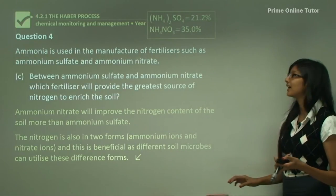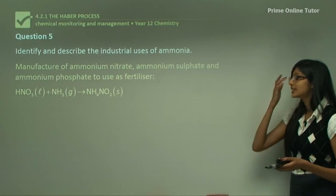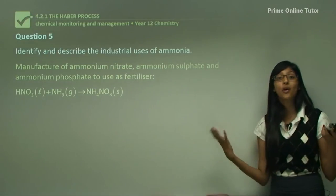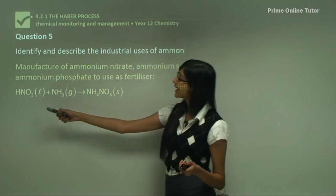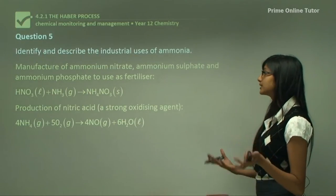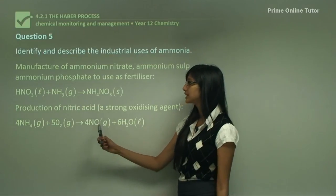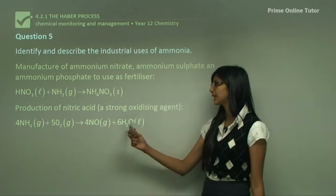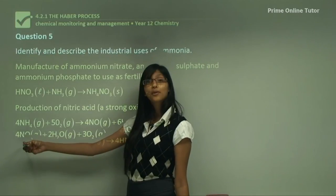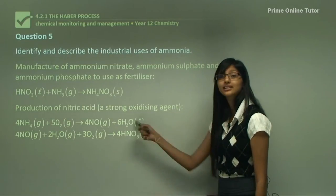Question 5 asks us to identify and describe the industrial uses of ammonia. Ammonia is used to manufacture ammonium nitrate, ammonium sulfate, and ammonium phosphate, which are all very important fertilizers. Nitric acid plus ammonia is used to form ammonium nitrate. Ammonia can also be used to produce nitric acid, which is a strong oxidizing agent: 4NH₃ + 5O₂ → 4NO + 6H₂O. The nitrate produced can then react further: 4NO + 2H₂O + 3O₂ → 4HNO₃.